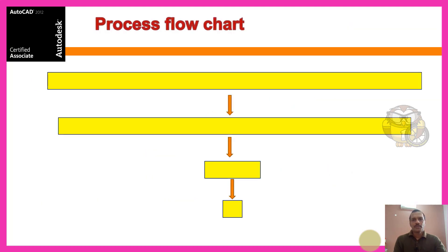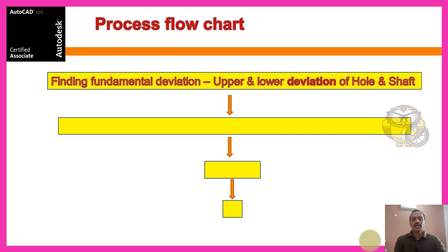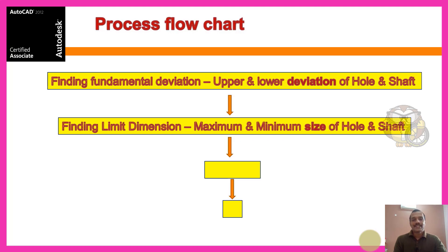The procedure: first, find the fundamental deviation — that is the upper deviation and lower deviation. First step: fit, first deviations. Next, find the limit dimension — that is, the maximum limit and minimum limit of hole and shaft.